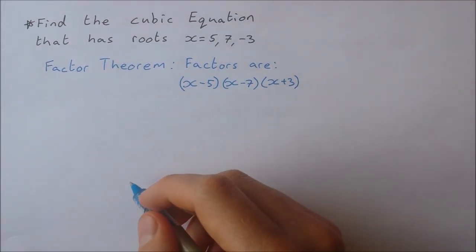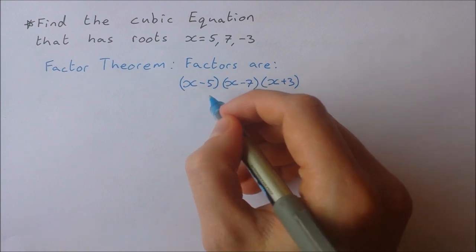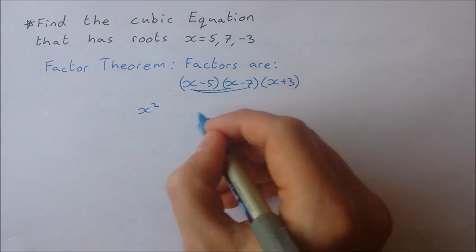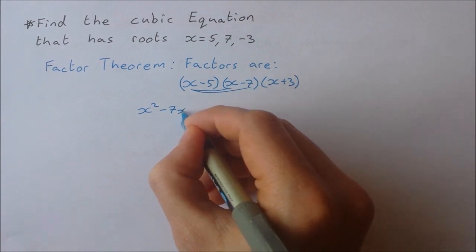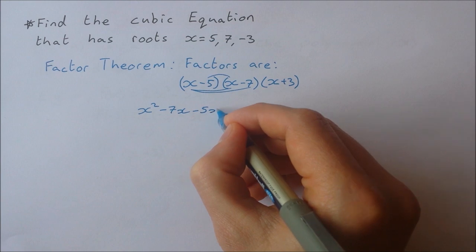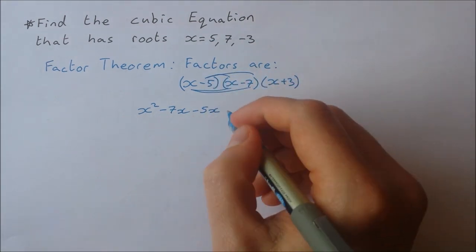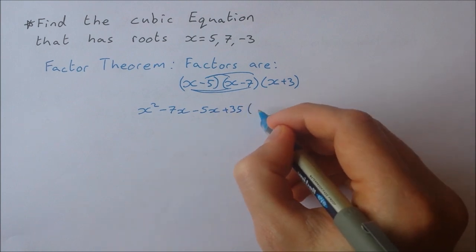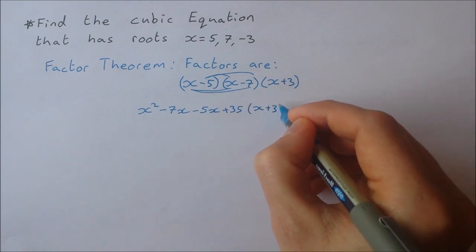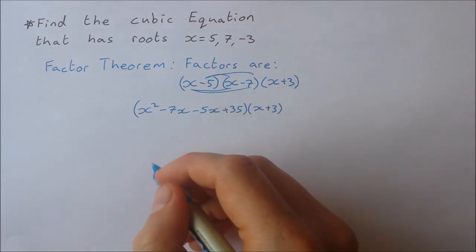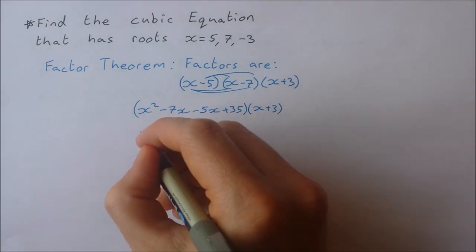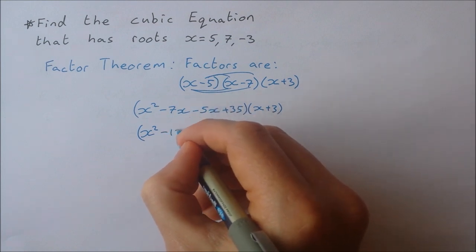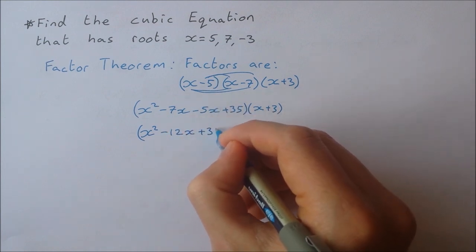Let's multiply these out. I'll start with the first two: x by x is x squared, x by minus 7 is minus 7x, minus 5 by x is minus 5x, minus 5 by minus 7 is plus 35. Tidying up: x squared minus 12x plus 35.